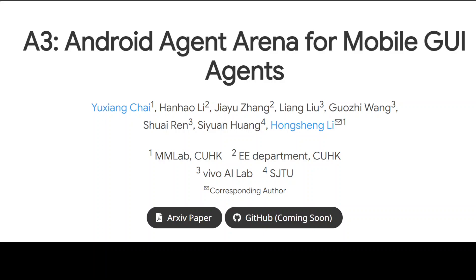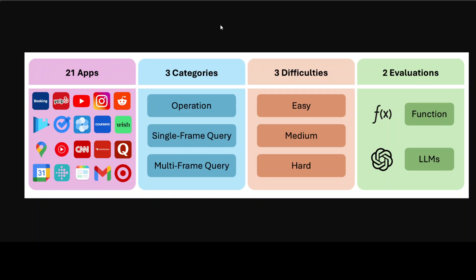To address this gap, these researchers have come up with A3 — Android Agent Arena — which is a new evaluation platform that offers meaningful and practical tasks, a larger action space, and an automated evaluation process. That is shown in this diagram — this is an overview of A3, where A3 contains over 200 tasks from 21 widely used apps.